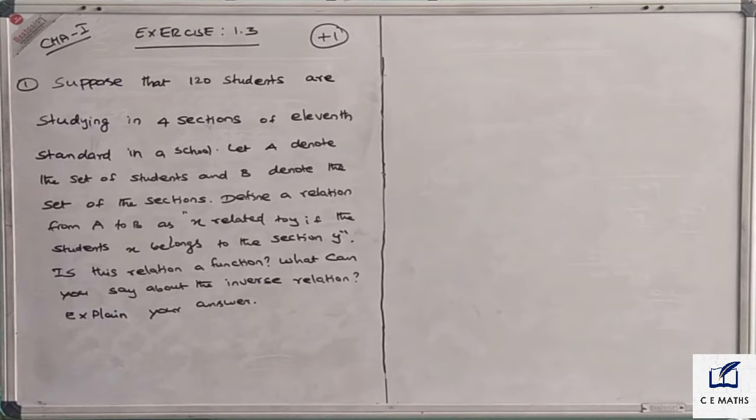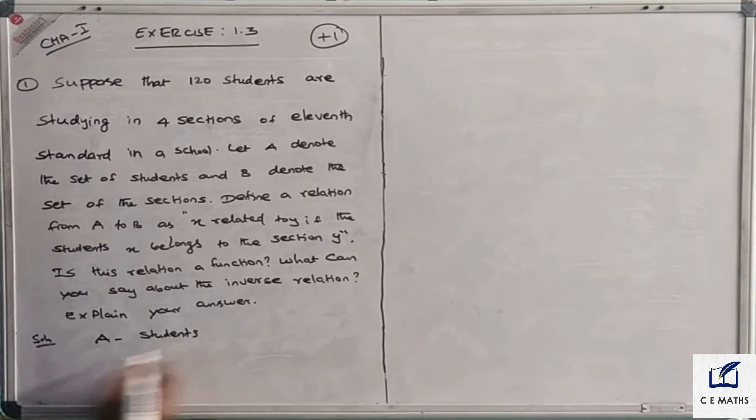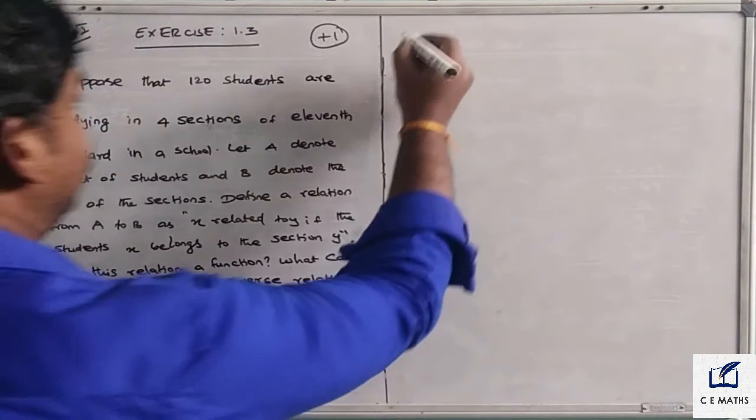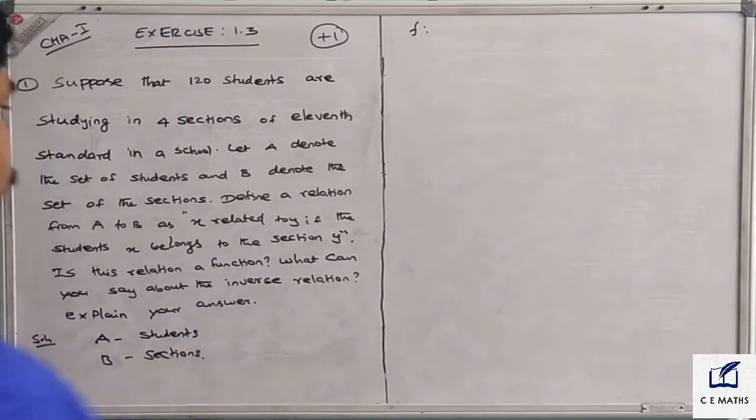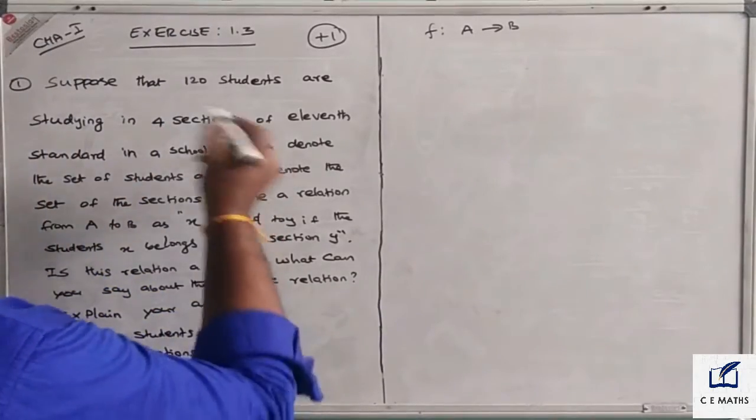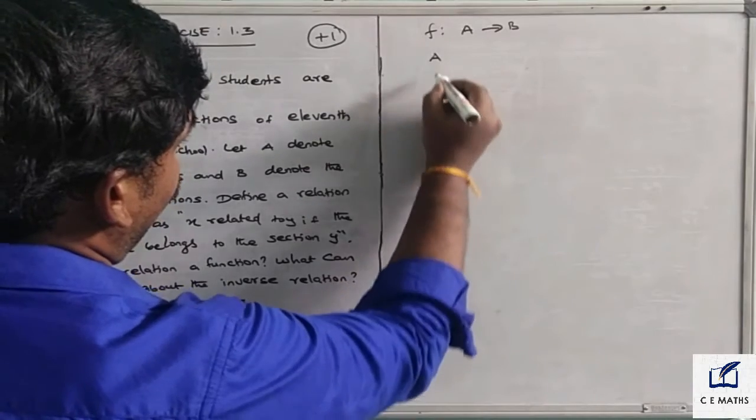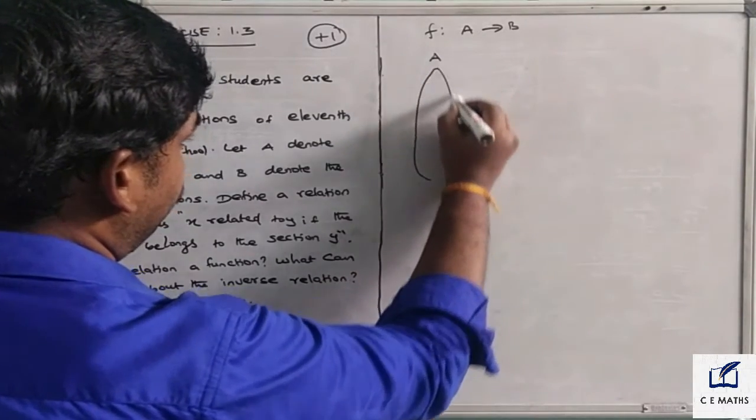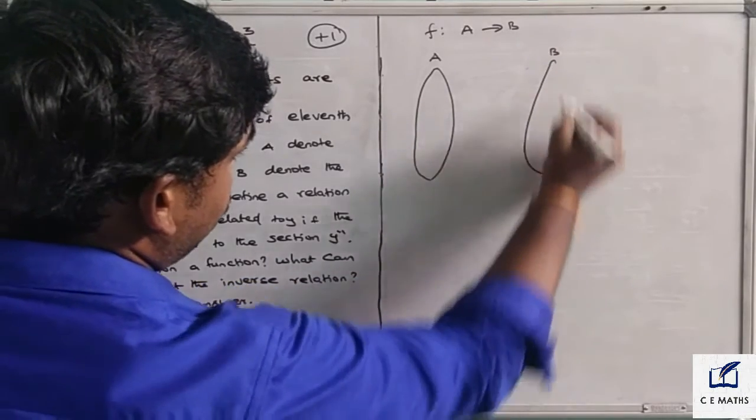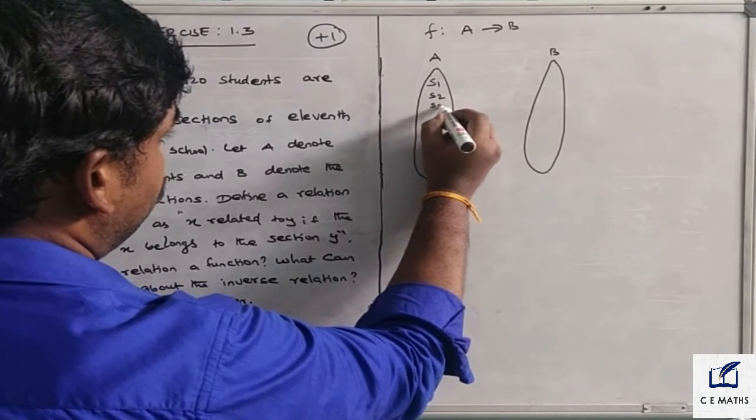Explain your answer. So first, the solution: A is students, B is sections. Students are 120 students. F is the function from A to B. A is the collection of students, B is the sections. So A represents students S1, S2, S3, and so on.